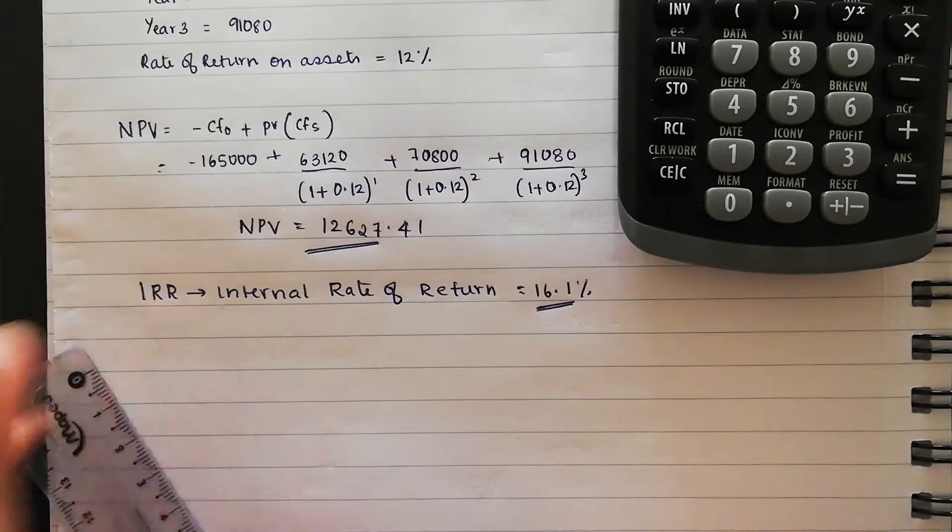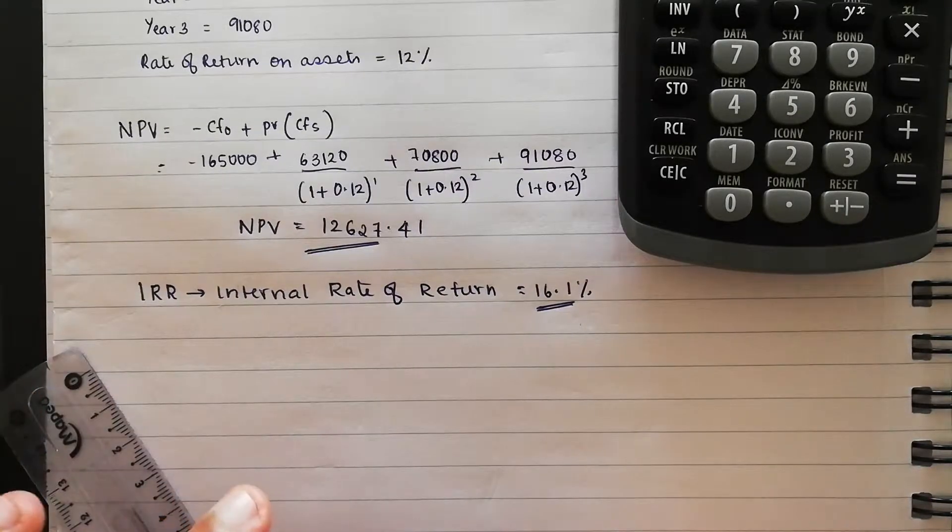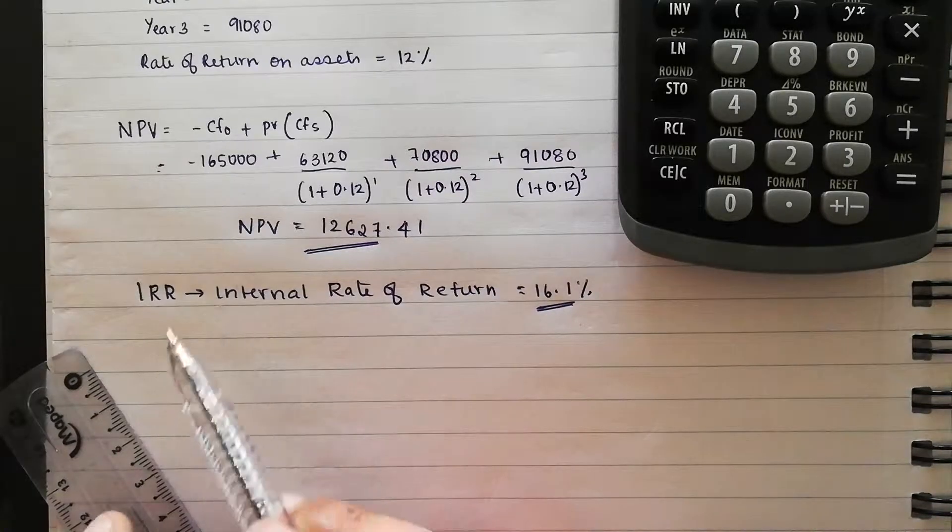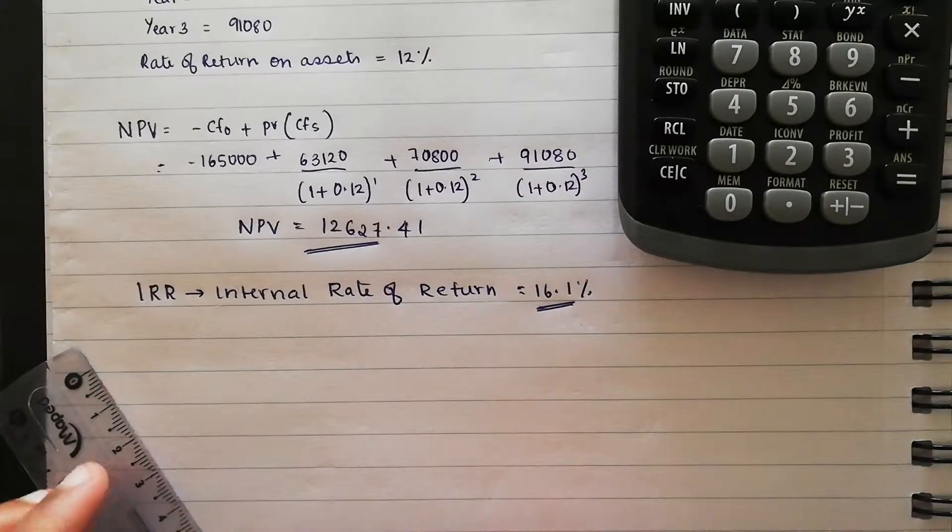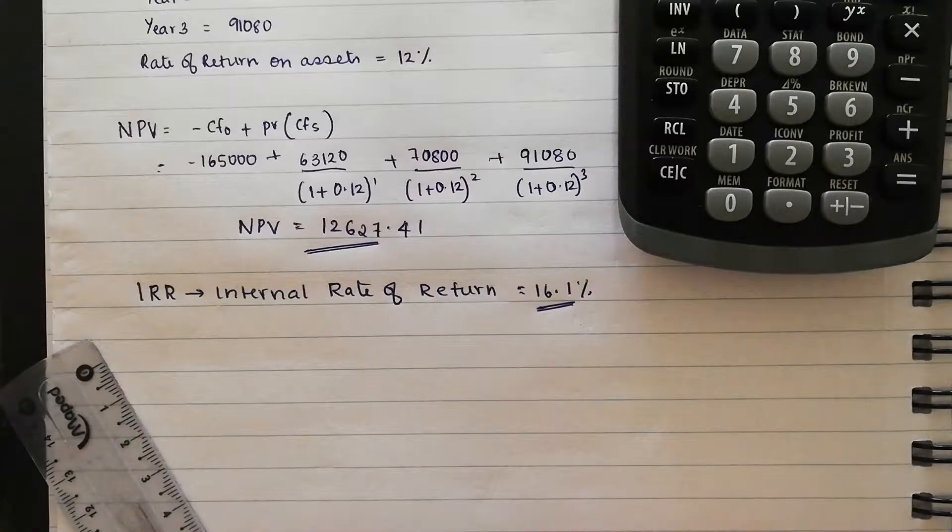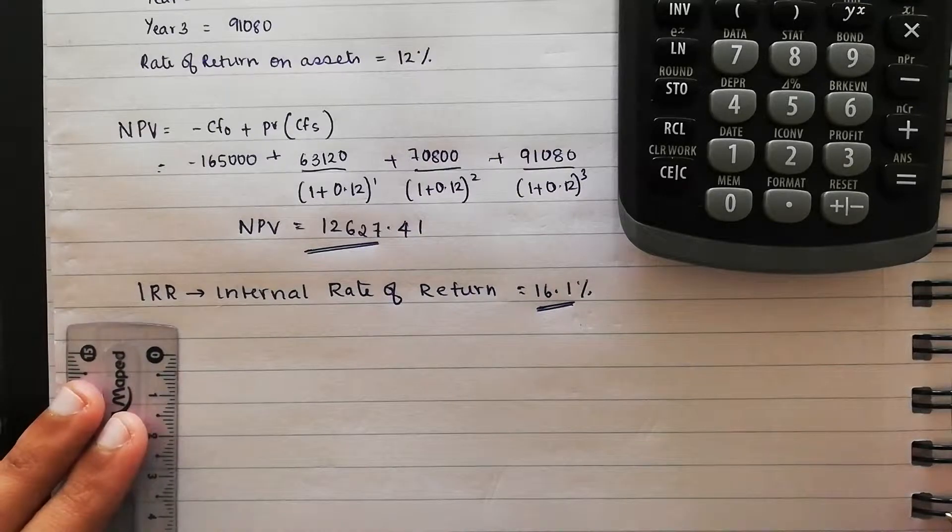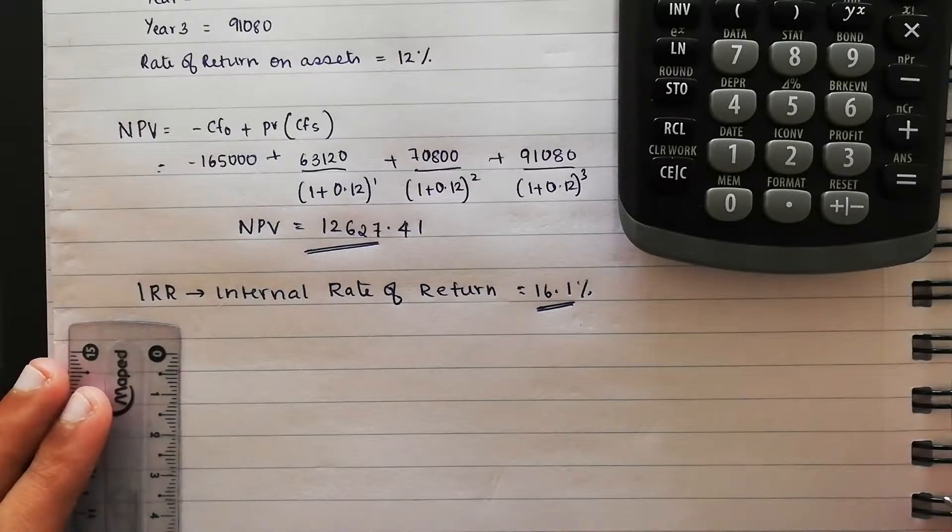Now the IRR is the rate of return when the NPV is zero. So in my last video I showed you how to find out the IRR. Now there is a diagram or analysis that a financial analyst uses. It is known as the NPV profile of the project.